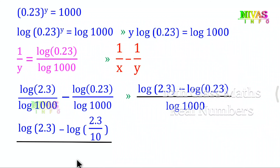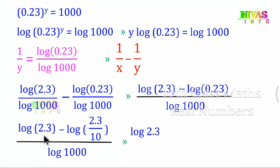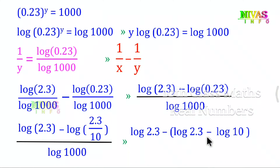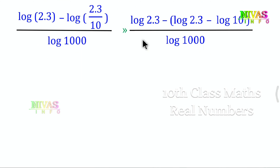The denominator is log 1000. Applying the division rule for logarithms: log 2.3 minus log 0.23 becomes log 2.3 minus log(2.3 by 10), which simplifies using the log division rule to give log 2.3 minus (log 2.3 minus log 10).